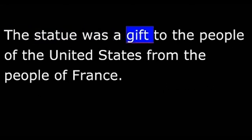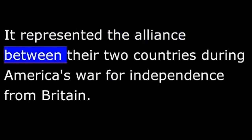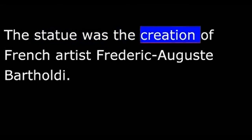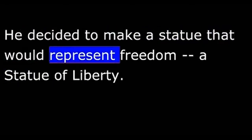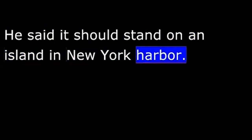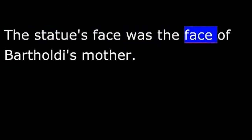The statue was a gift to the people of the United States from the people of France. It represented the alliance between their two countries during America's war for independence from Britain. The statue was the creation of French artist Frédéric Auguste Bartholdi. He decided to make a statue that would represent freedom — a statue of liberty — standing on an island in New York Harbor, where it would welcome all who came to America through that gateway. Bartholdi decided to make a copper statue in the image of a woman, Lady Liberty, who would hold a torch of freedom high above her head to light the world. The statue's face was the face of Bartholdi's mother.